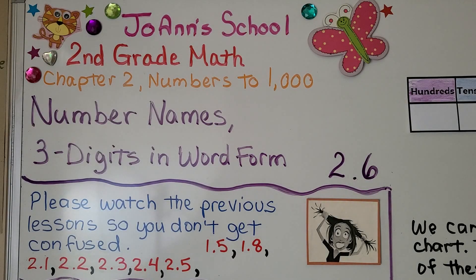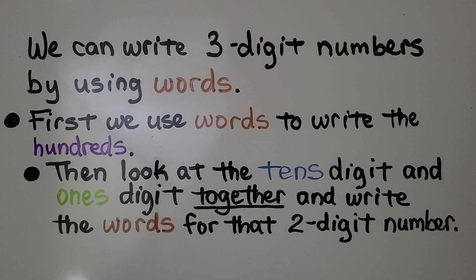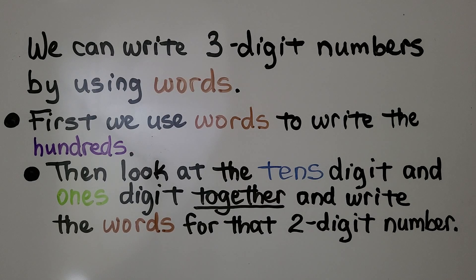Lesson 2.6: Number Names — Three Digits in Word Form. We can write three-digit numbers by using words. First we use words to write the hundreds, then we look at the tens digit and the ones digit together and write the words for that two-digit number.